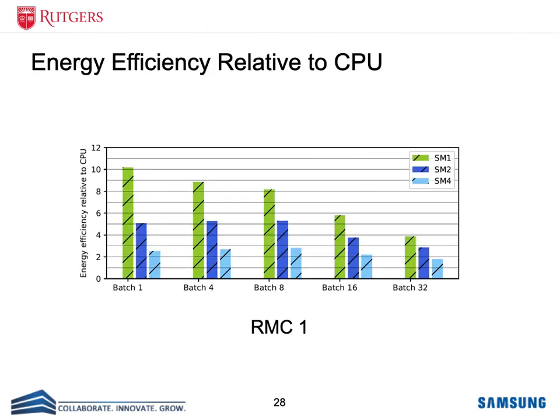We also evaluated the energy efficiency of SmartRec compared to a CPU system. For different configurations, the smart SSD outperforms the CPU by up to 10 times in energy efficiency. This is because of doing computation near the storage, which minimizes data traffic, as well as using customized hardware by offloading the computation to the FPGA.